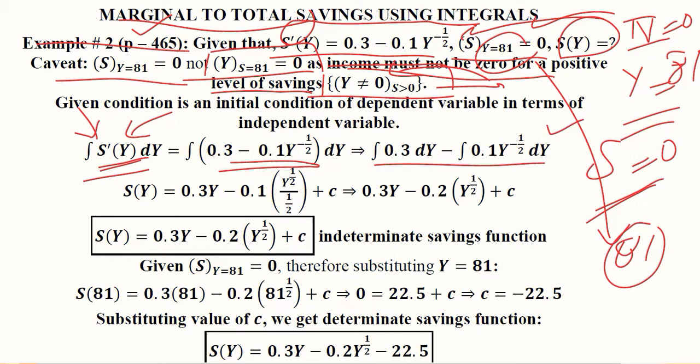This is the simple integration process in which we are using the power rule and coefficient rule and the difference rule due to this minus sign. After simplification we get S(Y) = 0.3Y - 0.2(Y^(1/2)) + c.